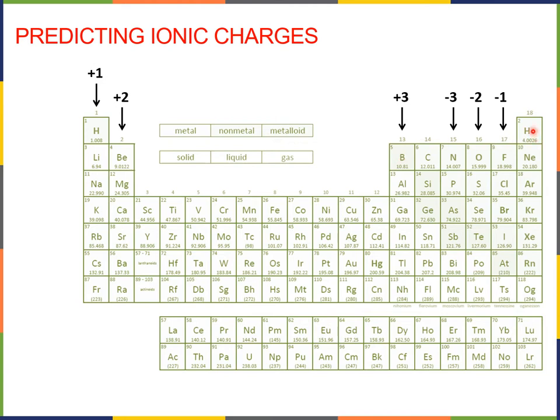For nonmetals, the noble gases tend not to form ions at all. The halogens tend to form minus one, the chalcogens minus two, and the pnictogens minus three. So basically, we count in from the edges of the periodic table, negatively charged anions minus one, minus two, minus three on the nonmetal side, and positively charged cations, plus one, plus two, skip over the transition metals, and plus three on the metal side.